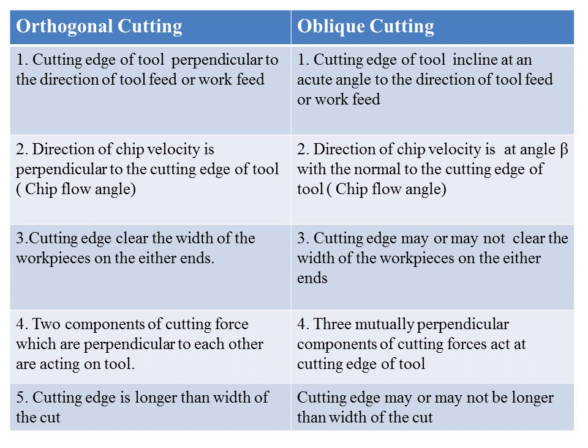The cutting edge clears the width of the work piece on either end in orthogonal cutting, but in oblique cutting the cutting edge may or may not clear the width of the work piece on either end. In orthogonal cutting, two components of cutting force perpendicular to each other act on the tool. In oblique cutting, three mutually perpendicular components of cutting force act on the cutting edge of the tool.